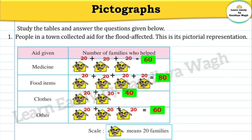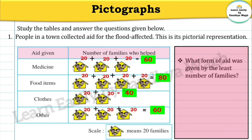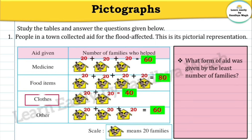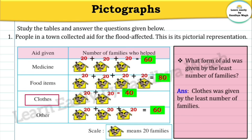Now let us see the next question: What form of aid was given by the least number of families? 'Least' means the smallest number. Medicines: 60 families. Food items: 80 families. Clothes: 40 families. Other: 60 families. So clothes was given by only 40 families. Our final answer: Clothes was given by the least number of families.